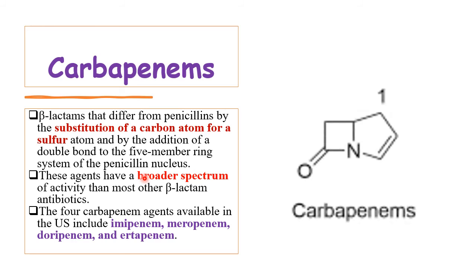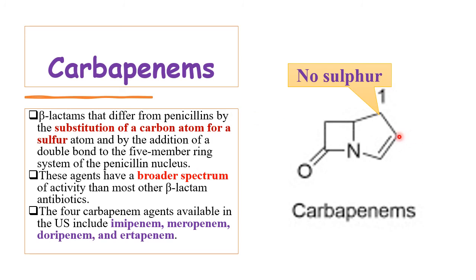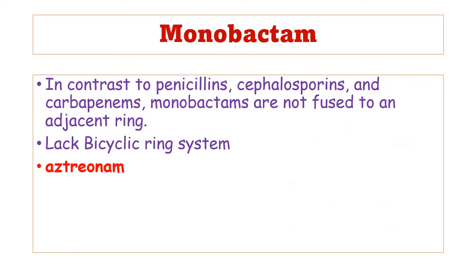In the carbapenem chemical structure, you may observe that it is similar to penam, but the sulfur atom is absent and a carbon atom is present in its place. The basic difference between carbapenem and penam is the substitution of carbon for sulfur — that is why it is termed carbapenem. The '-em' in carbapenem represents the presence of a double bond between the second and third carbon atoms.